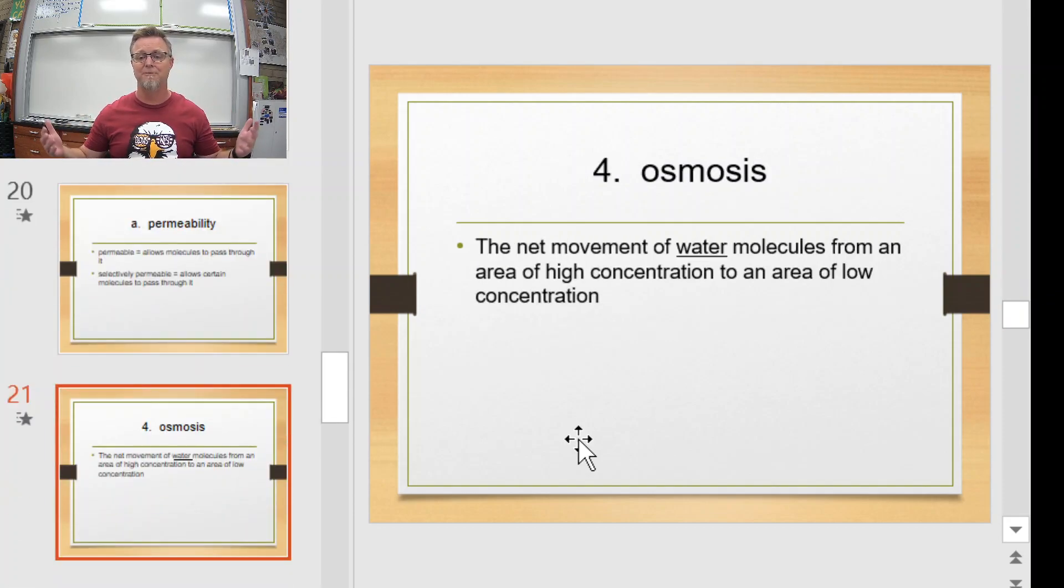So, this is a different type of diffusion. It's called osmosis. Osmosis literally is the diffusion of water. So, the net movement of water molecules from an area of high concentration to an area of low concentration is how we define osmosis, or basically, the diffusion of water. So, when water moves from high concentration to low concentration, it's called osmosis.